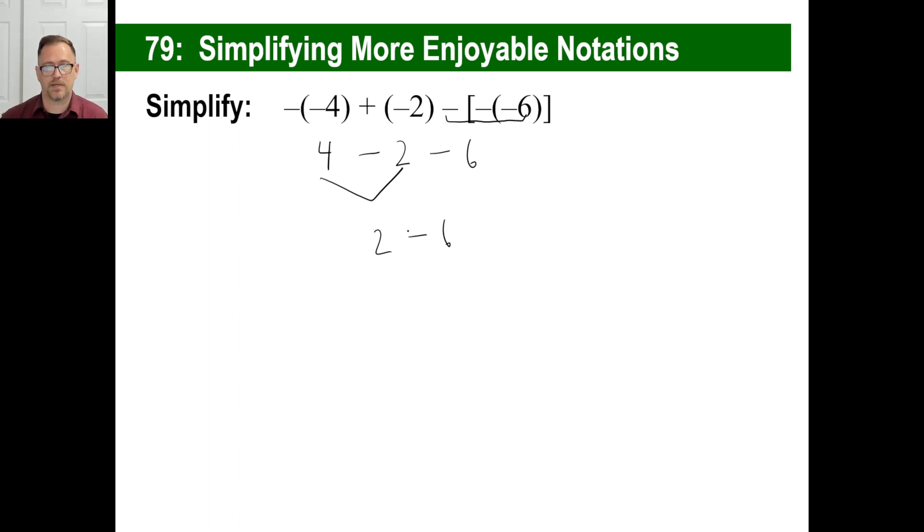So 4 minus 2 is 2. 2 minus 6. That's one of those, you know, we got a positive there and a negative there. So we take the 6 minus 2 is 4. And then we go, okay, this one is farther away from 0. So there we go. -4 is your answer.